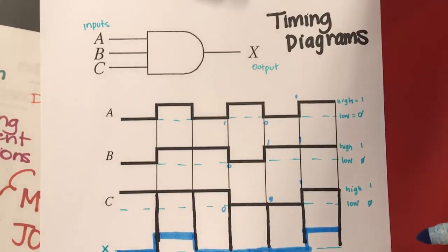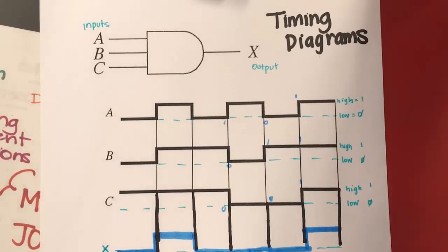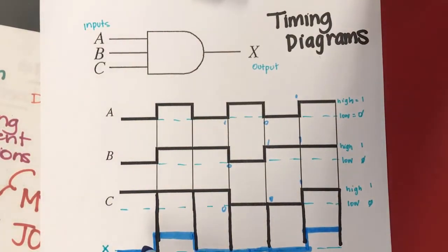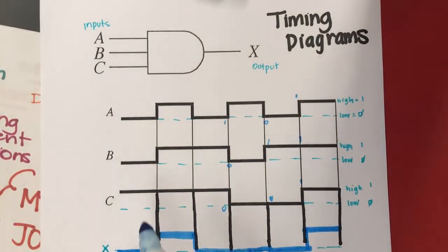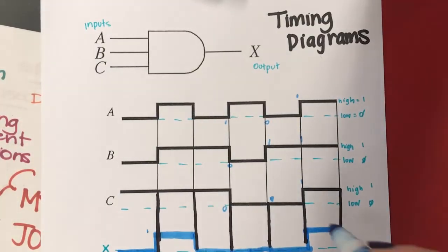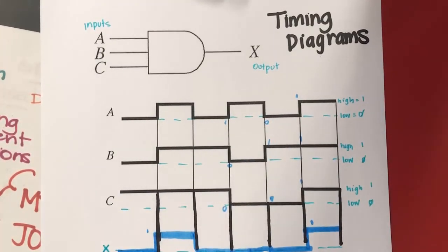And so as we look at that, that would be the value of X. So you can see where it's high, it goes to one here. Okay. Hope that helps.